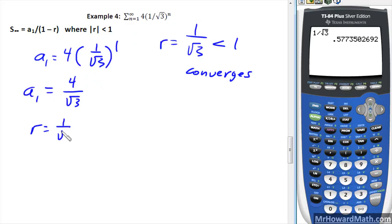We need the r value, we already found that, 1 over root 3. So now plug those things into the formula. Our infinite geometric series would be equal to 4 over root 3, all divided by 1 minus the r value, which is 1 over root 3.